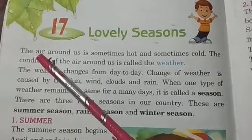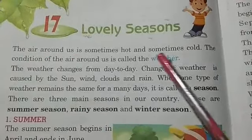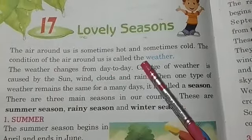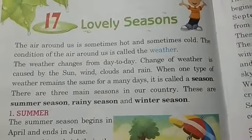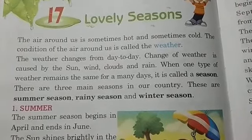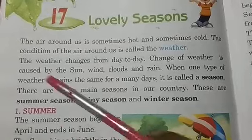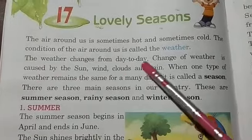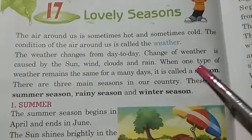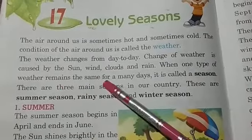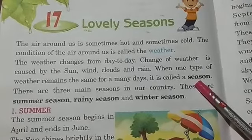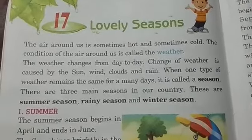The air around us is sometimes hot and sometimes cold. The condition of the air around us is called the weather. The weather changes from day to day. Change of weather is caused by the sun, wind, clouds and rain. When one type of weather remains the same for many days, it is called a season.